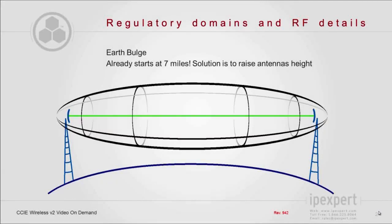Let's talk about a topic that is not intuitive but really matters. If you have outdoor links, the curve of the earth becomes relevant — it already starts at seven miles. This means that if you have two wireless access points or wireless bridges that are seven miles apart, they will not see each other because of the natural curve of the earth, which is already at the horizon level.